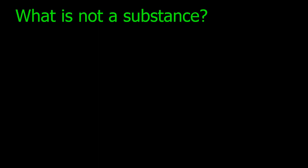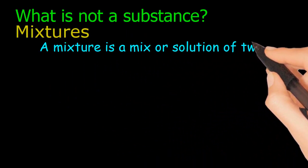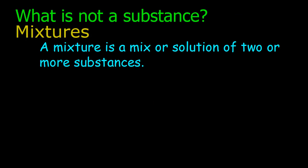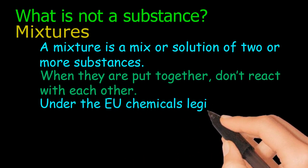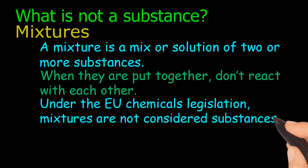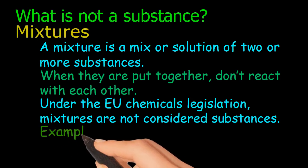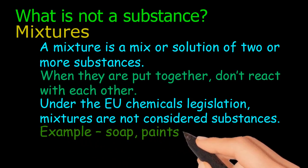What is not a substance? Mixtures. A mixture is a mix or solution of two or more substances. When they are put together, they don't react with each other. Under the EU chemicals legislation, mixtures are not considered substances. Examples: soap, paints, etc.